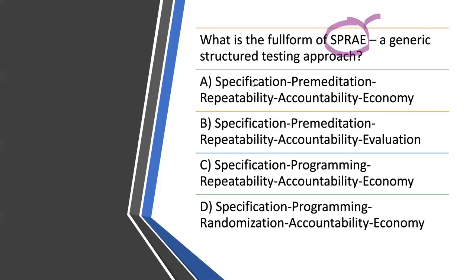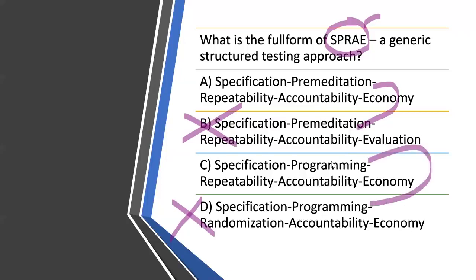Use the odd-one-out technique. First, look at the first word — 'specification' appears in all options, so we can't eliminate using it. Then 'premeditation' and 'programming' each appear twice, so we can't eliminate on those either. 'Repeatability' appears three times and 'randomization' once — so randomization is the odd one out. 'Economy' appears three times and 'evolution' once — so evolution is the odd one out. This narrows it down to options A and C.